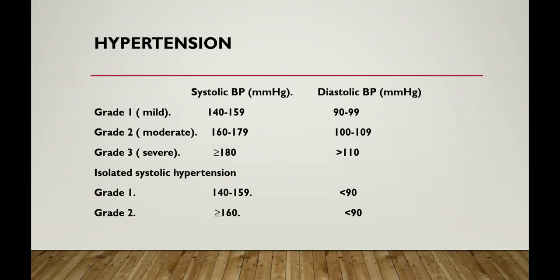Coming to hypertension, it has been divided into 3 grades. Grade 1 systolic BP is 140-159 mmHg, diastolic BP is 90-99 mmHg. Grade 2 systolic BP is 160-179 mmHg, diastolic BP is 100-109 mmHg. Grade 3 systolic BP is 180 mmHg or above, diastolic BP is 110 mmHg or above.